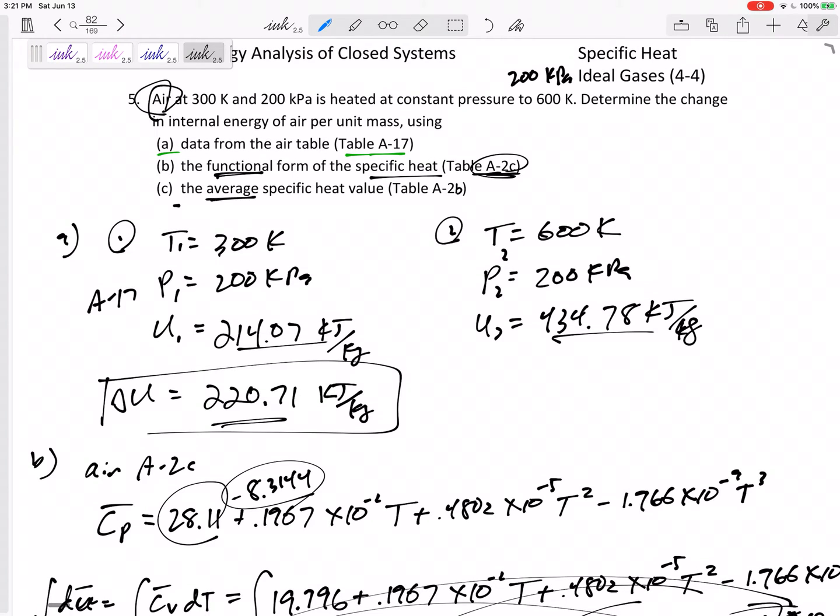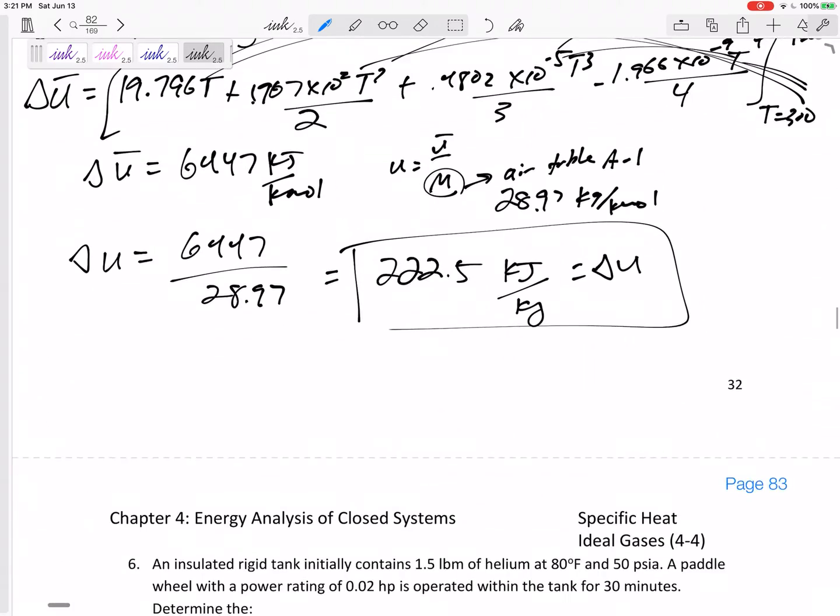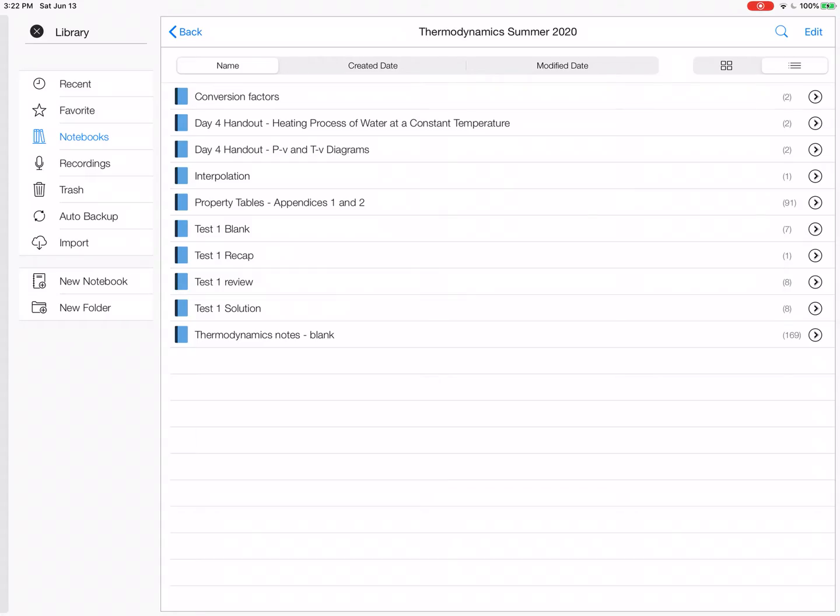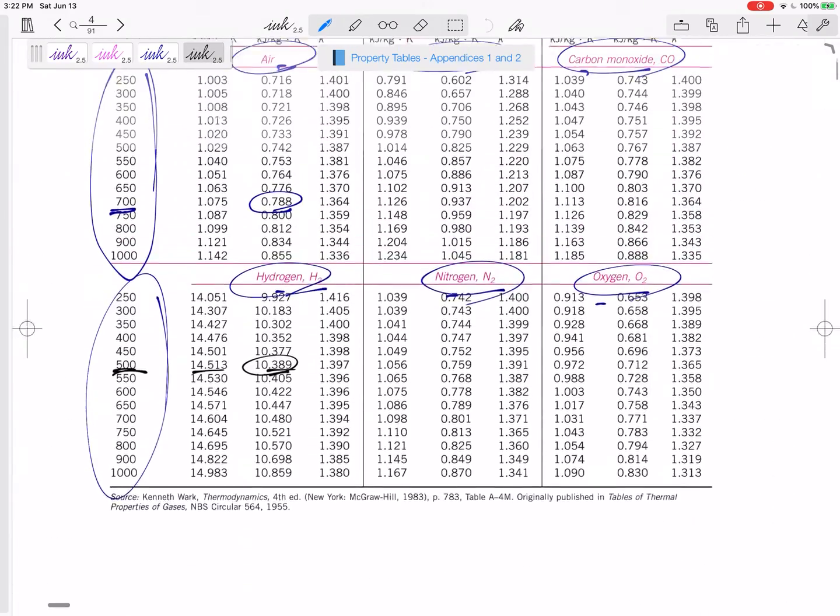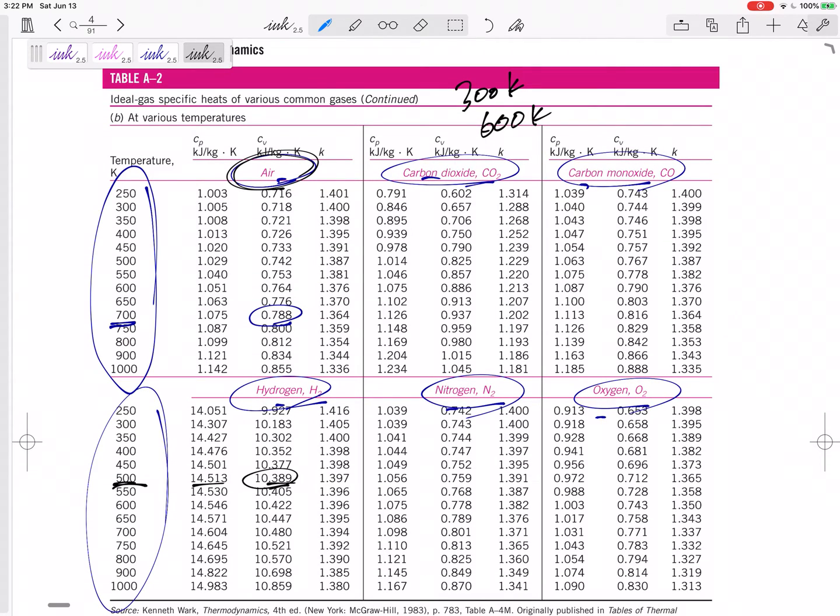Let's see. Let's use the average or the constant specific heat from Table A2B. Part C, Table A2B for air. Property tables, Table A2B. I'm looking at air. I'm going from 300 Kelvin to 600 Kelvin. Should I use this air value 0.718, should I use 0.764, or should I use the value at 450?